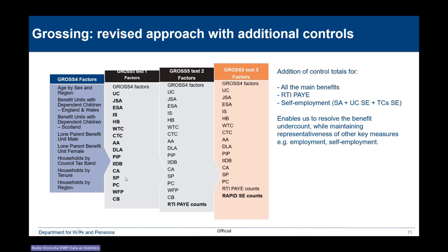We went through a process of development and iteration on this. Adding control totals for benefits caused some other problems — in particular, when we were able to resolve the undercount with the new grossing factor for benefits, that pushed the employment count on the self-reported employment count on the FRS out. As a result, we added extra controls using RTI PAYE counts. That caused some problems for self-employment, so we've ended up adding control totals for self-employment as well, which is getting us to approximately balanced results across all of the key variables on the FRS.